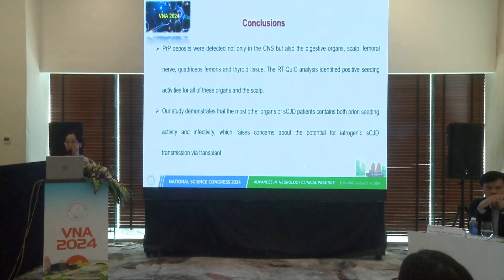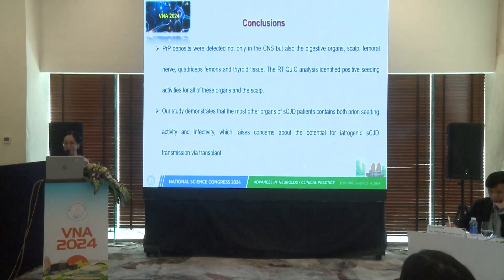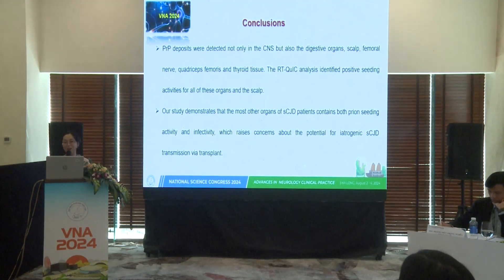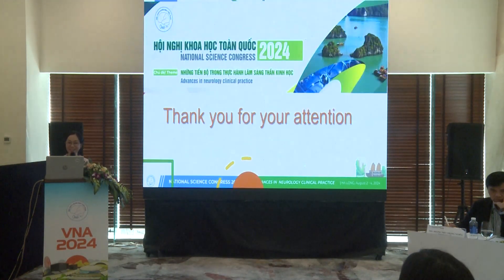In conclusion, PrP deposits were detected not only in the brain, but also in digestive organs, scalp, femoral nerve, quadriceps femoris, and thyroid tissue. RT-QuIC analysis identified positive seeding activity in all of these organs including the scalp. Our study demonstrates that most organs from sCJD patients contain both prion seeding activity and infectivity, raising concern about the potential for iatrogenic sCJD transmission via transplantation. Thank you so much.